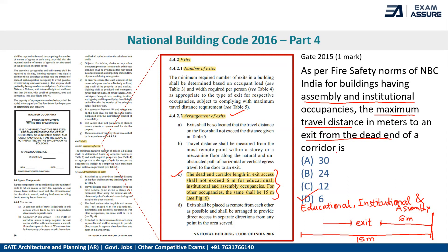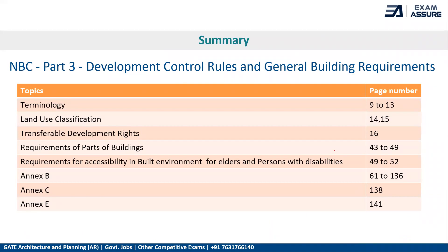This type of question has also been asked in government exams like ISRO. To summarize, a table is provided showing important topics and page numbers from each part of NBC. From Part 3, the key topics are: terminology, land use classification, transferable development rights, requirements of parts of buildings, requirements for accessibility in the built environment, and annexes B, C, and E.